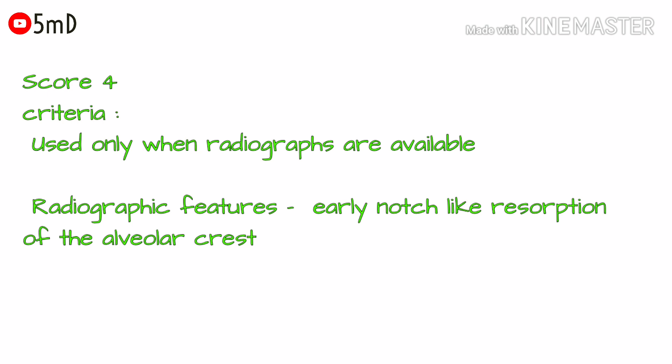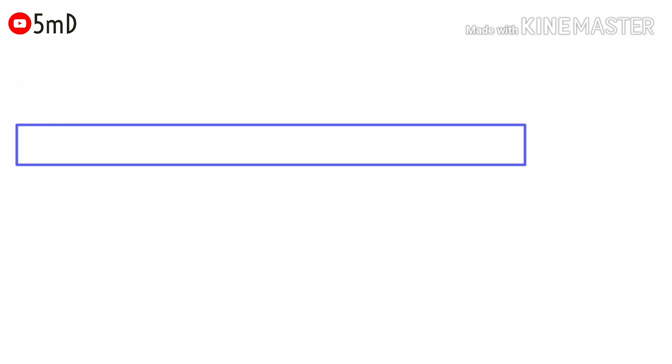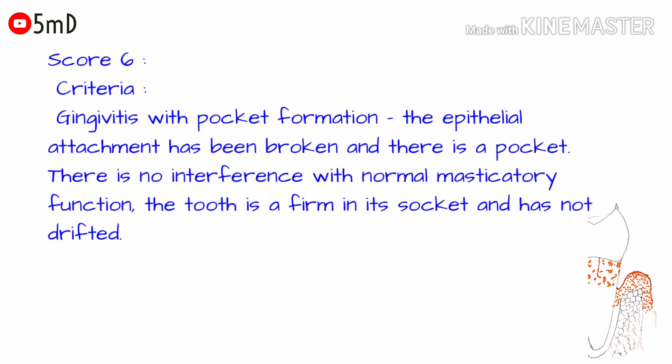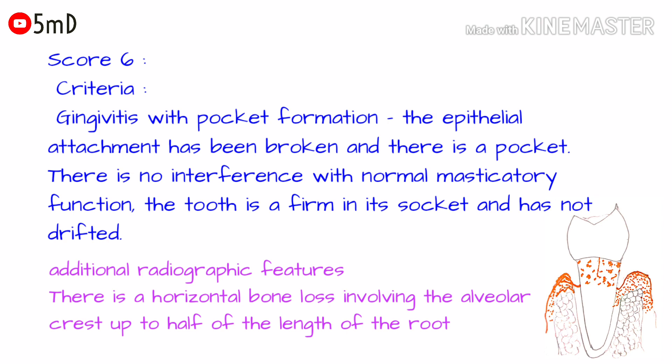Score four is assigned only when the radiograph is available. For score six, the criteria should be gingivitis with pocket formation — the epithelial attachment has been broken and there is a pocket. There is no interference with normal masticatory function; the tooth is firm in the socket and has not drifted. In such conditions the scoring criteria is six.